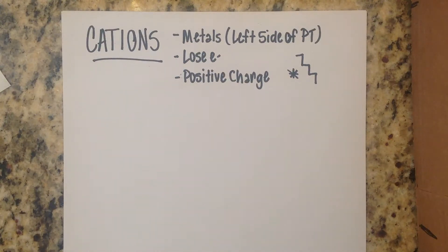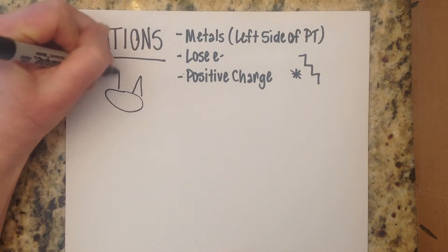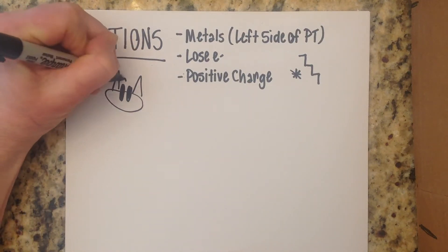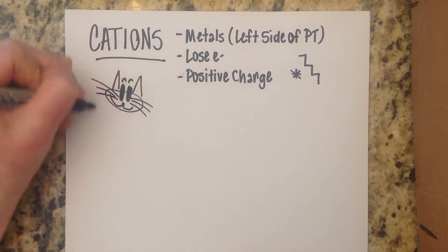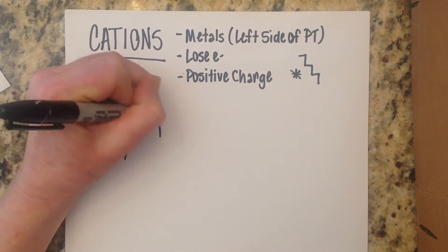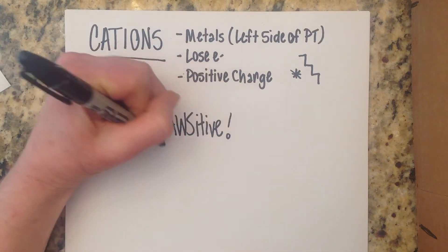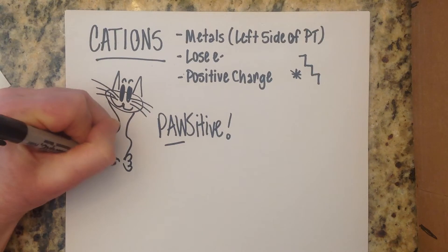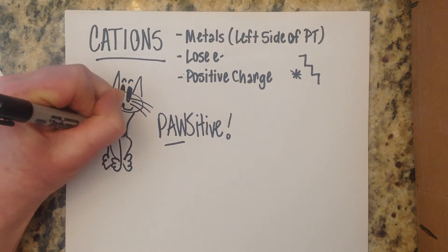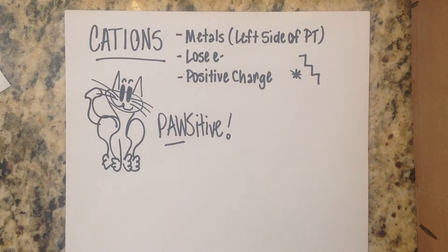Cations are always positive, and here's a cute way to remember that: cats have four paws. So you can remember that cations are positive. And if you remember that cations are positive, you can remember that anions are the opposite — anions are going to be negative. Hopefully that little trick will help you remember.